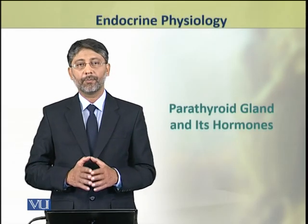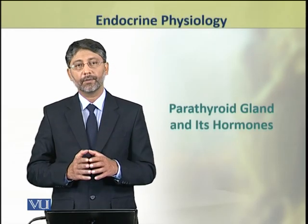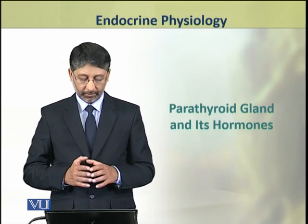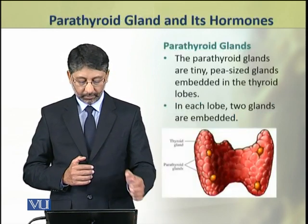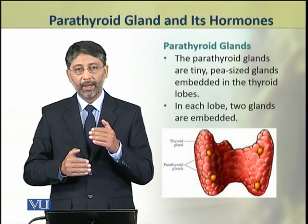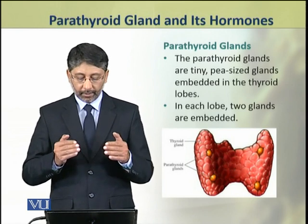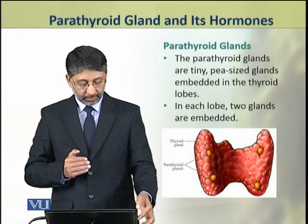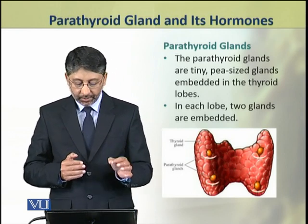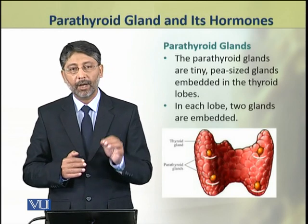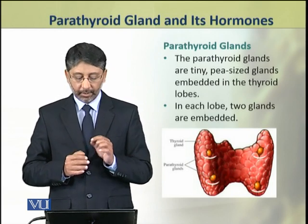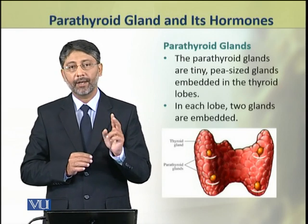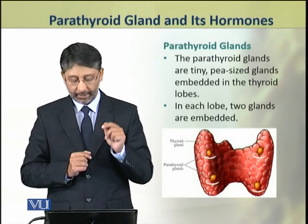Dear students, in this topic we shall discuss the parathyroid gland and its hormones. The parathyroid glands are tiny pea-sized glands which are embedded in the thyroid gland. Each lobe of the thyroid has two parathyroid glands embedded in it.